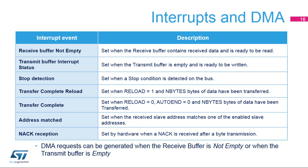Several events can trigger an interrupt. The receive buffer not empty flag is set when the receive buffer contains received data ready to be read. The transmit buffer interrupt status is set when the transmit buffer is empty and ready to be written. The stop detection flag is set when a stop condition is detected on the bus. The transfer complete reload flag is set when the reload bit is set and Nbytes of data have been transferred. The transfer complete flag is set when the reload and auto end bits are cleared and Nbytes of data have been transferred. The address match flag is set when the received slave address matches one of the enabled slave addresses. The NACK reception flag is set when a not acknowledge is received after a byte transmission. DMA requests can be generated when the receive buffer not empty or transmit buffer empty flag is set.